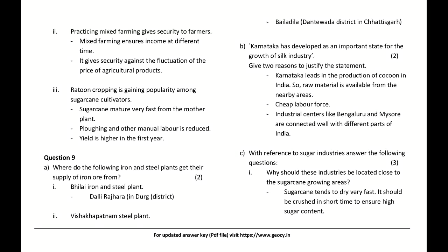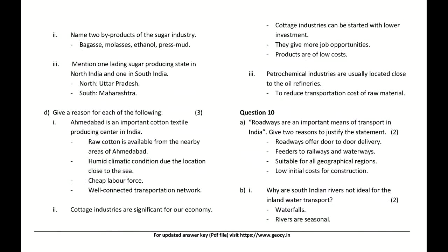With reference to sugar industries: Why should these industries be located close to sugarcane growing areas? Answer: Sugarcane tends to dry very fast and should be crushed in a short time to ensure high sugar content. Name two by-products of the sugar industry: Bagasse, molasses, ethanol, press mud. Name one leading sugar producing state in North India and one in South India: North — Uttar Pradesh; South — Maharashtra.